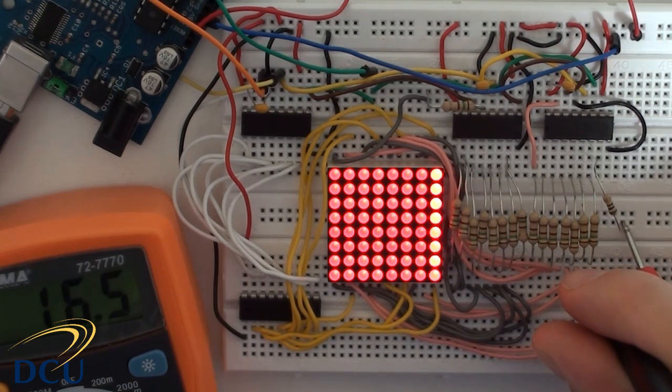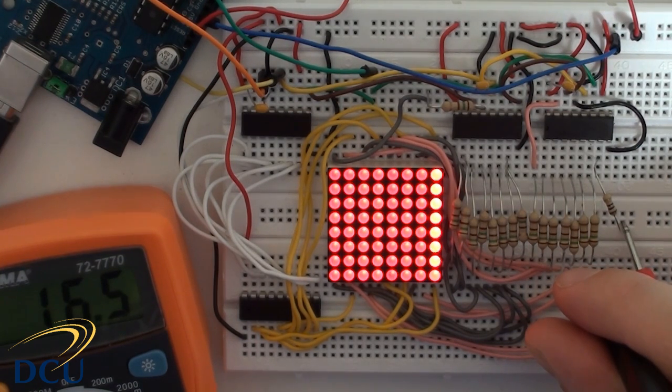You can see in this case now that the last column, when we're just displaying a red display, the last column is significantly brighter than the other columns. And this is because I'm not driving this display to its full potential. By reducing the size of the resistors on the sink side, we're able to increase the current that we're driving through the display.